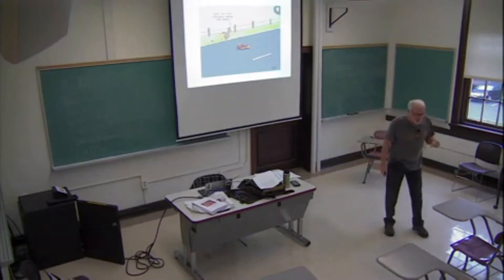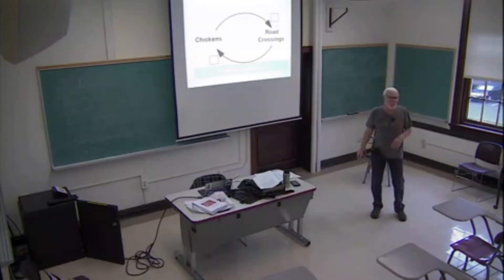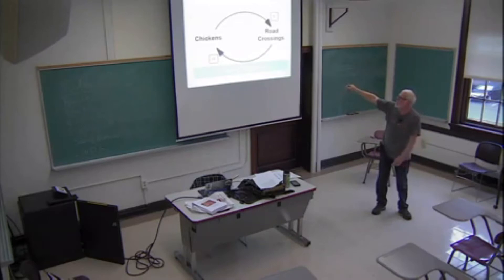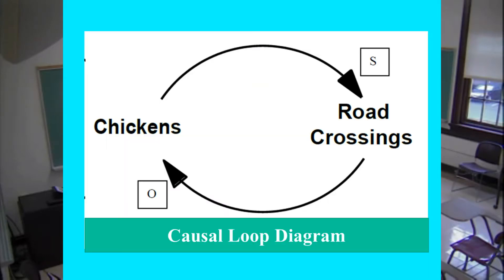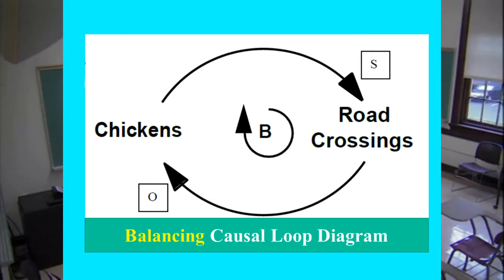Life is not simple, so something always happens — we'll call it a roadkill. As chickens go up, road crossings go up. And if road crossings result in dead chickens, then as road crossings go up, chickens go down. We use an O to indicate the opposite direction. We call this a balancing loop because as one goes up, the other goes down. Carl uses a minus sign for this.